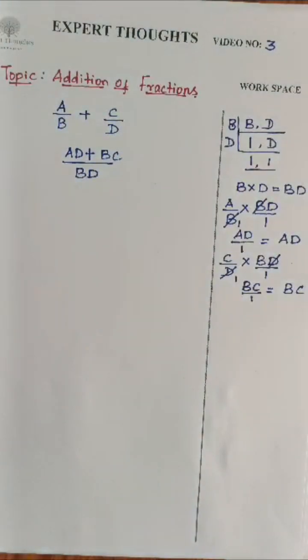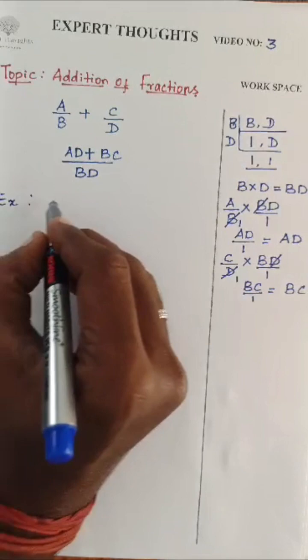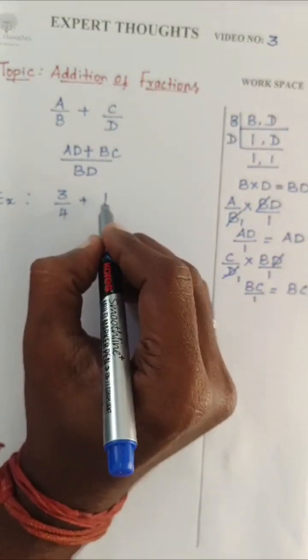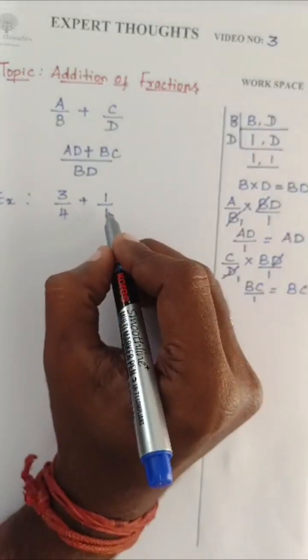This is the general format or the general rule how to do the addition of fractions. I will go with an example like 3 by 4 plus 1 by 4.